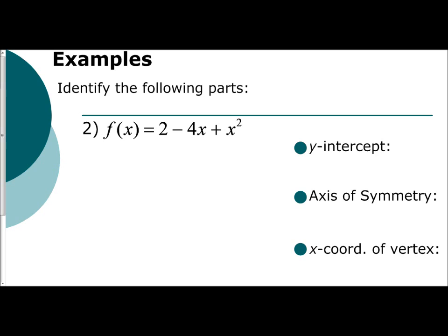So in this, we want to identify the following parts: the y-intercept, the axis of symmetry — which remember is an equation — and the x-coordinate of the vertex. We'll also find the y-coordinate of the vertex to make sure we're fine with that.